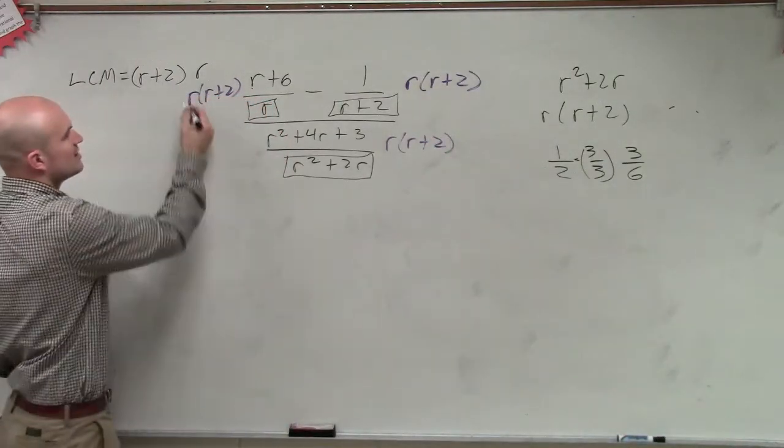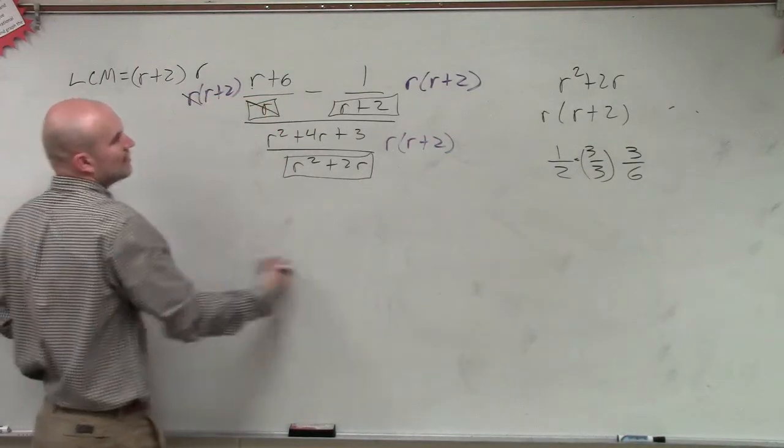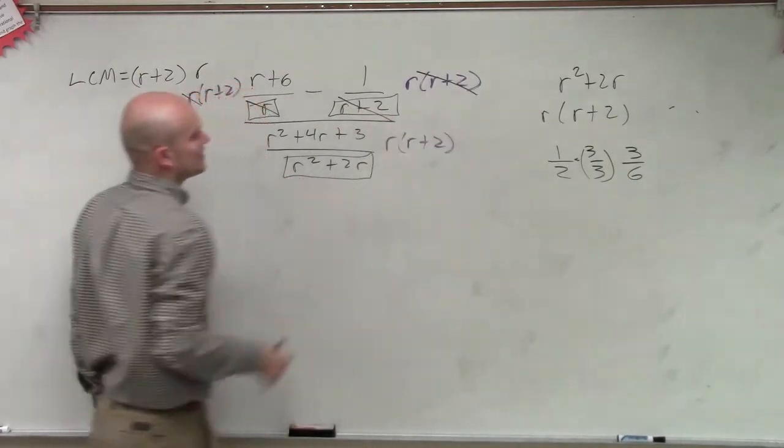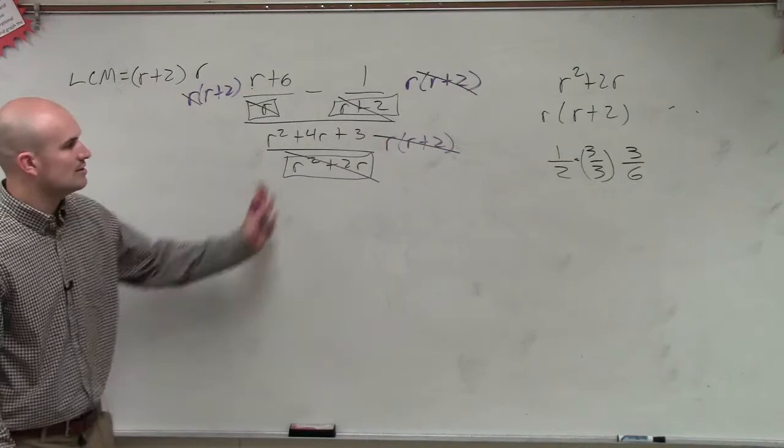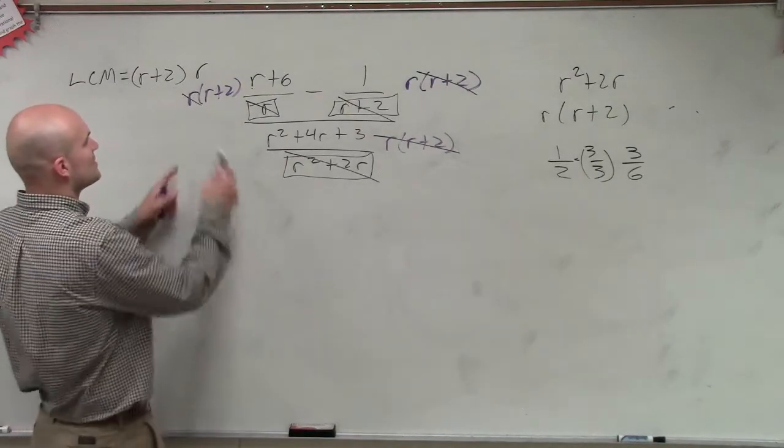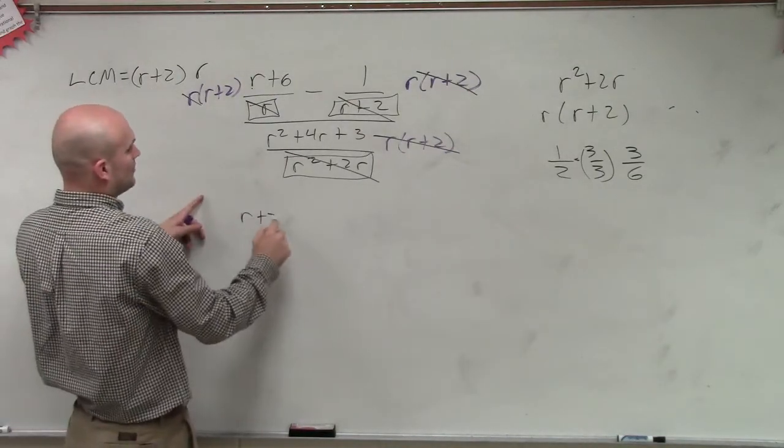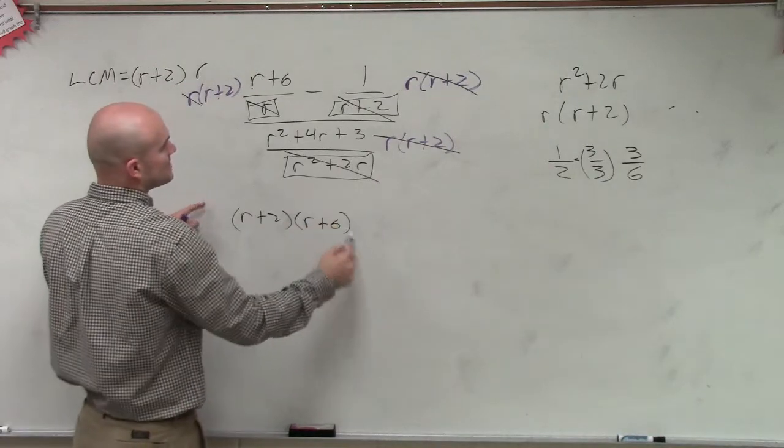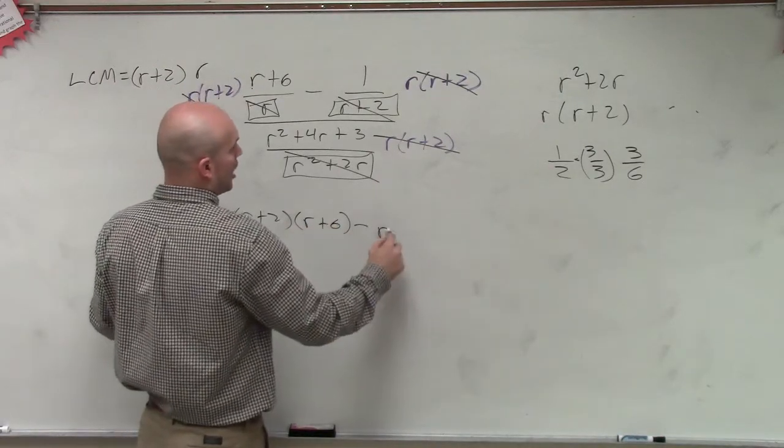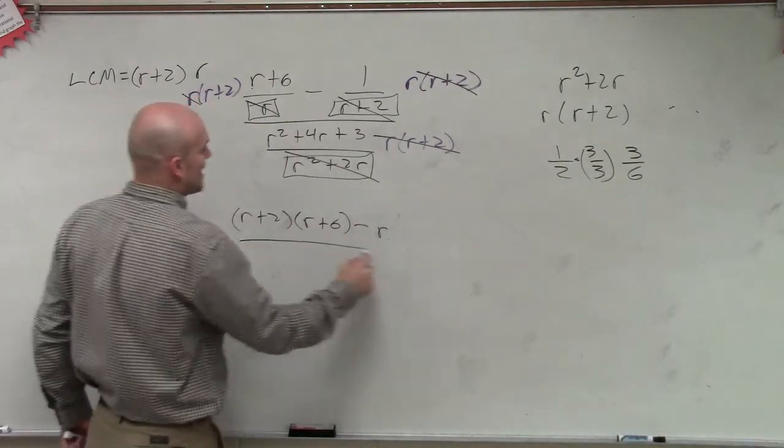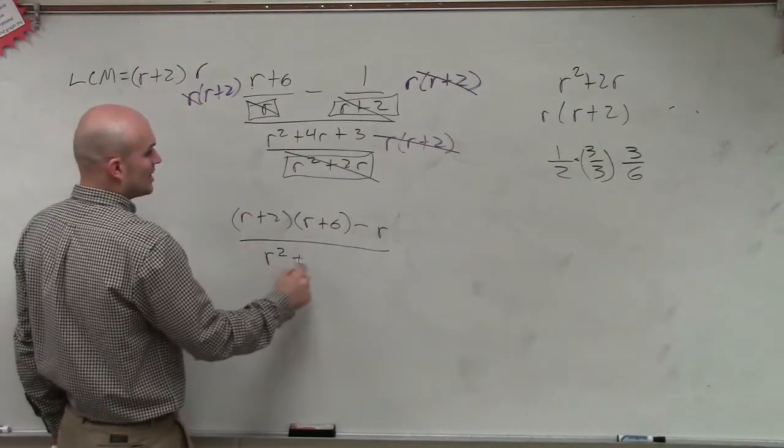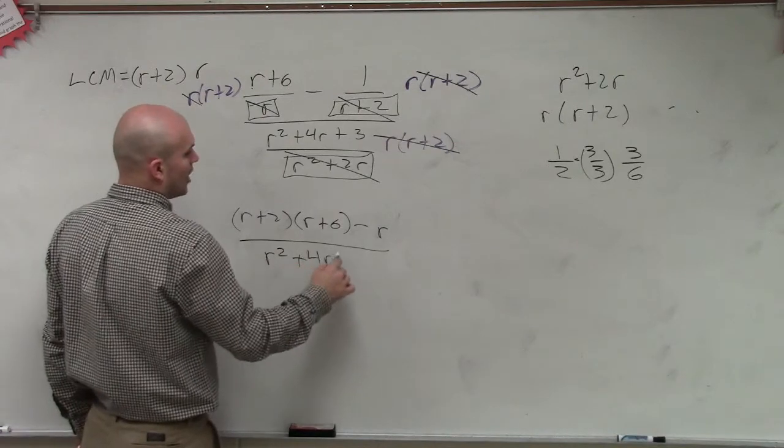Well, ladies and gentlemen, what I notice here is my r's divide to 1. Here, my r plus 2's divide to 1. Here, my r times r plus 2's cancel out. So therefore, now I have r plus 2 times r plus 6 minus r minus r, and then 4r plus 3.